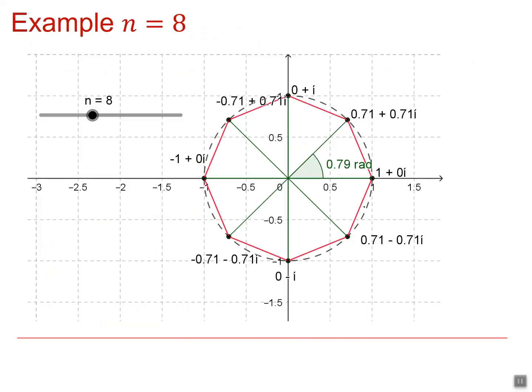This is the Argand diagram for n equals 8. So omega would be the first of those, the one with the smallest argument. So this would be omega squared. Remember, multiplication is multiply the moduli and add the arguments. So it's still going to be on the unit circle, and it will be two sections around.